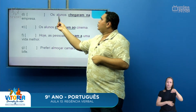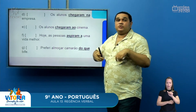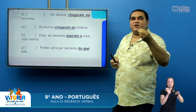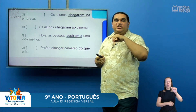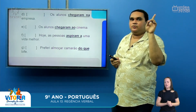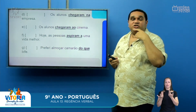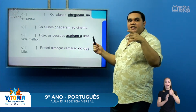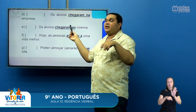Letra D: 'Os alunos chegaram na empresa.' Está falso, porque quem chega, chega a algum lugar. Com o verbo chegar, nós sempre vamos utilizar a preposição 'a', 'ao' ou 'aos'. A construção 'chegar na' está incorreta — assim como 'cheguei em casa'. O correto é 'cheguei a casa' ou 'cheguei à escola'. Letra E: 'Os alunos chegaram ao cinema.' Está verdadeiro — quem chega, chega a algum lugar. 'Chegaram ao cinema' está correto.